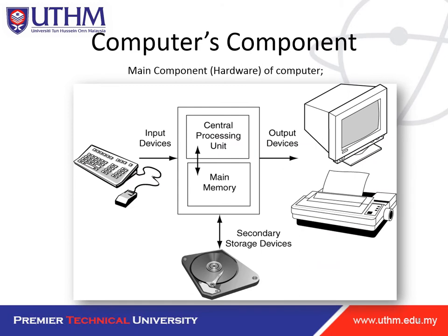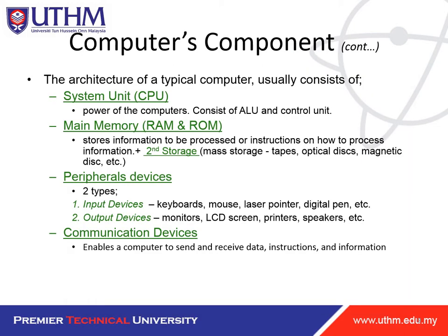Computer components: you must have the inputs, and then you have the central unit, and then we have the output device. Output devices include printer, speaker, and a screen which displays output. We also have the secondary storage device, which includes the pen drive, hard disk, and so on.